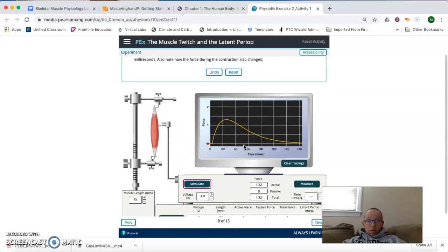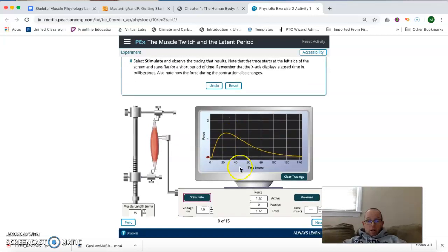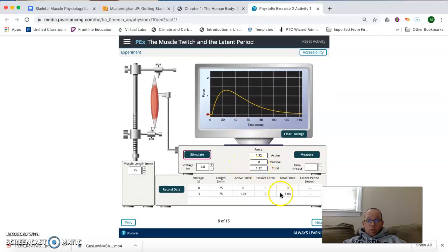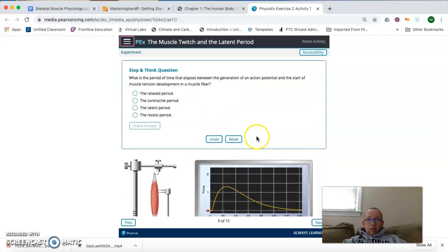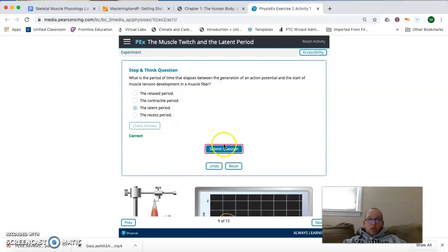So, the force is a little higher. It's about 1.32, as we can see here, as compared to 1.04 before. And now, the period of time that elapses between the generation of an action potential and the start of muscle tension development is called the latent period. That's something you would have gotten from the introduction and something you would have defined in the first question.